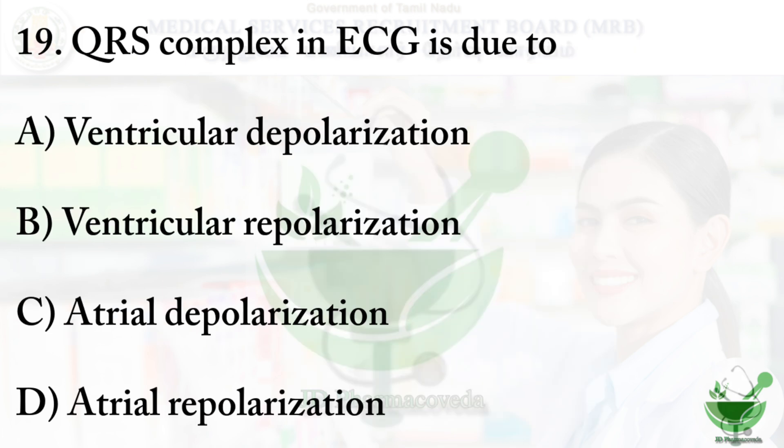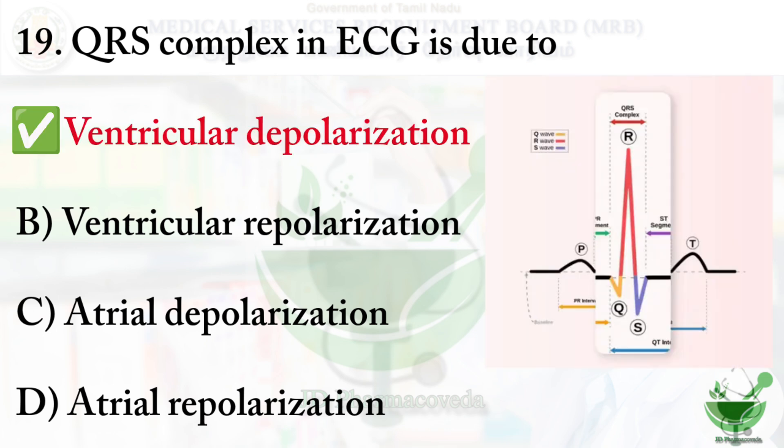Question number 19: The QRS complex in an ECG is due to what? We know the ECG contains P, Q, R, S curves. Options are: A) Ventricular depolarization, B) Ventricular repolarization, C) Atrial depolarization, D) Atrial repolarization. The correct option is A — Ventricular depolarization. This occurs when an electrical impulse passes through the AV node along the ventricular conduction system, including the bundle of His, bundle branches, and Purkinje fibers.